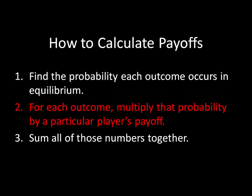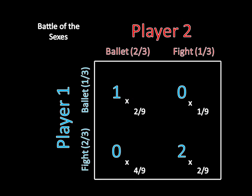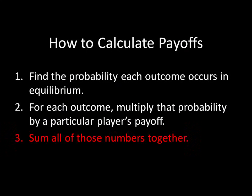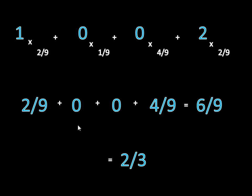The next step is, for each outcome, to multiply that probability by a particular player's payoff. Looking at player one's payoffs: one times two-ninths, zero times one-ninth, zero times four-ninths, and two times two-ninths. Lastly, we sum all those numbers together. Two-ninths plus zero plus zero plus four-ninths equals six-ninths, which reduces to two-thirds. So player one in the mixed strategy Nash Equilibrium earns two-thirds of a point.